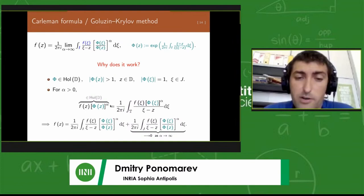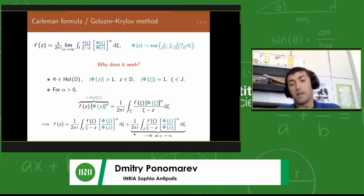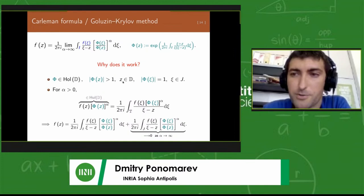Now, since phi is analytic and it's also non-vanishing, exponential of something, we can take it to any positive power alpha. The product with f(z), which is analytic, will also be an analytic function. f is what we want to reconstruct, the analytic function inside the disc. We can write the Cauchy formula for that.